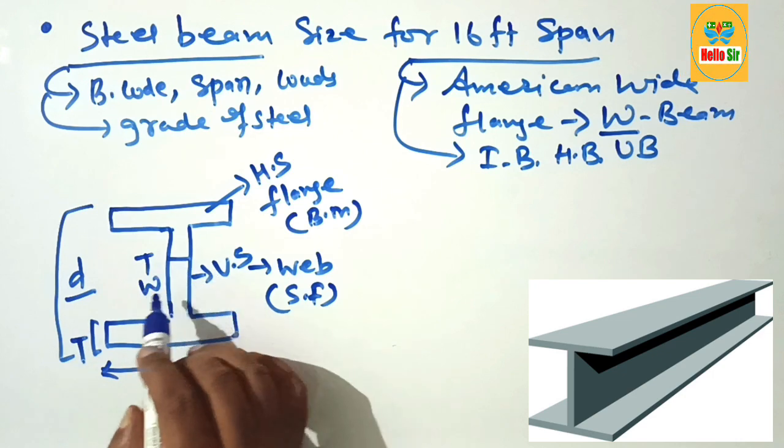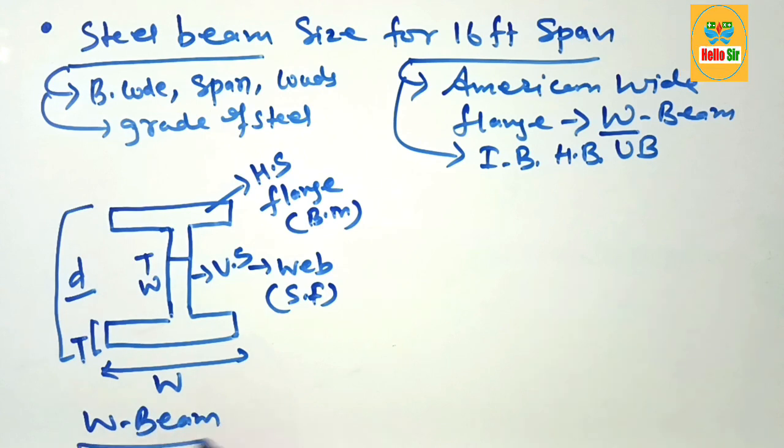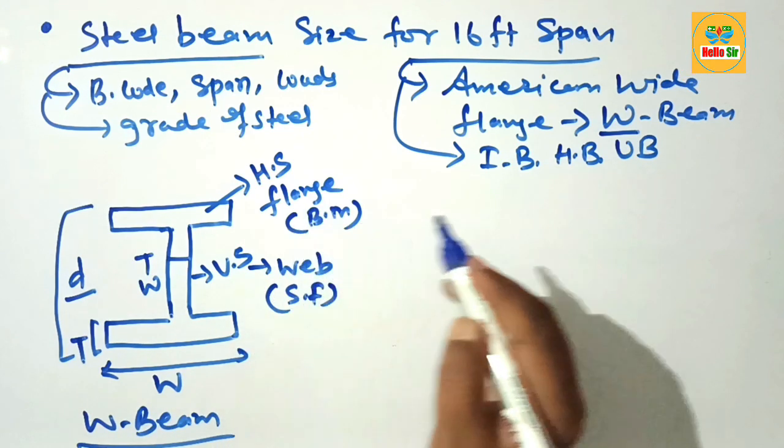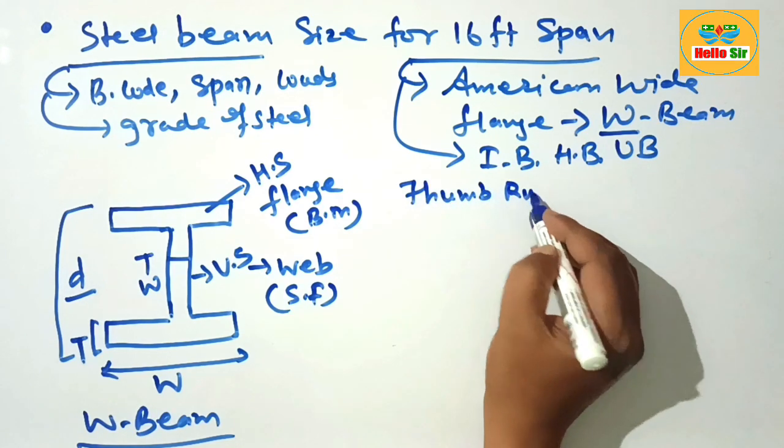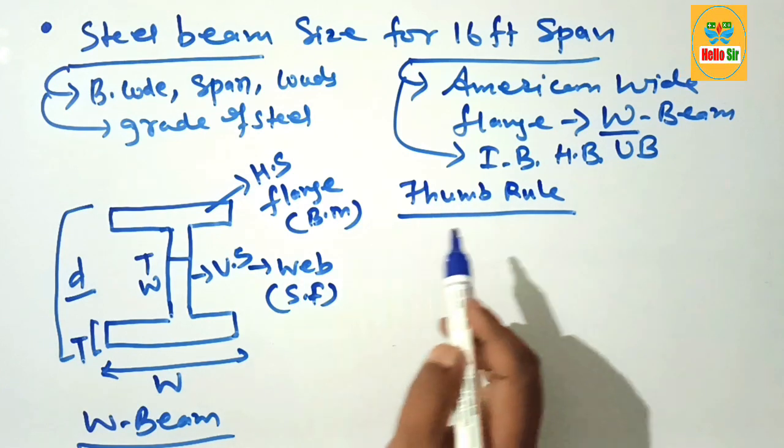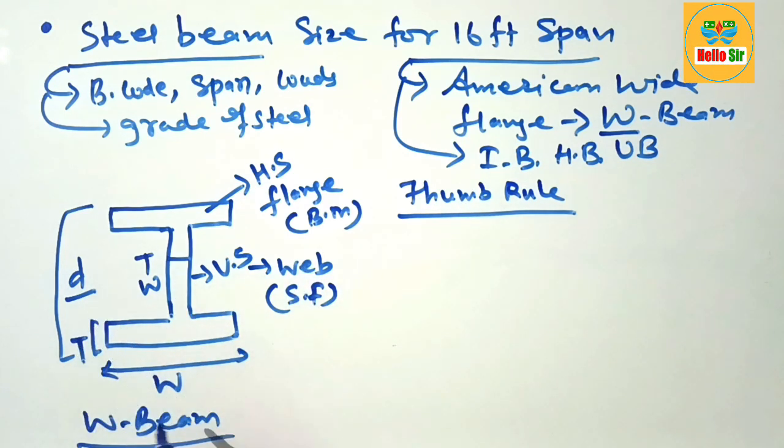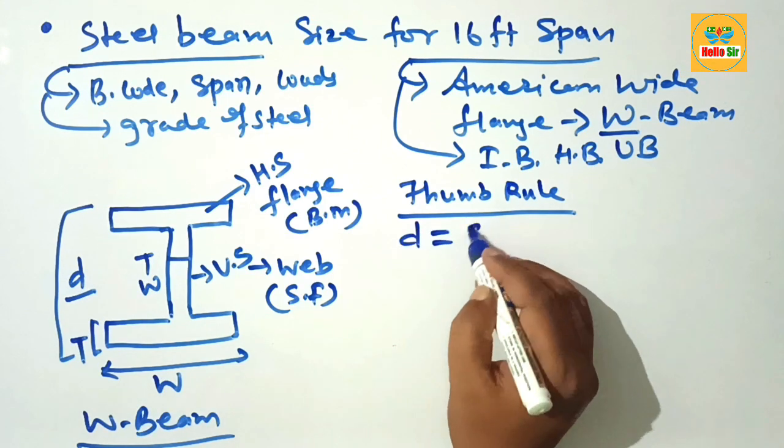This is the diagram to show about different dimensions of W-beam. Here we calculate the steel beam size as per thumb rule. Sizing of steel beam means you have to find out the depth and width of the beam. The depth of the beam should be your span in inches divided by 24.